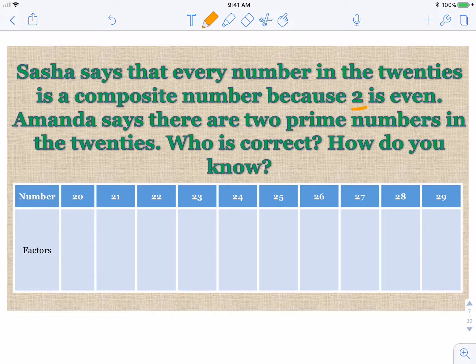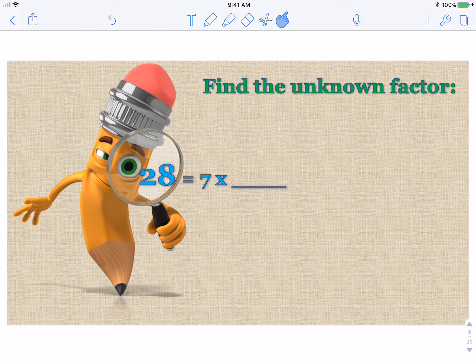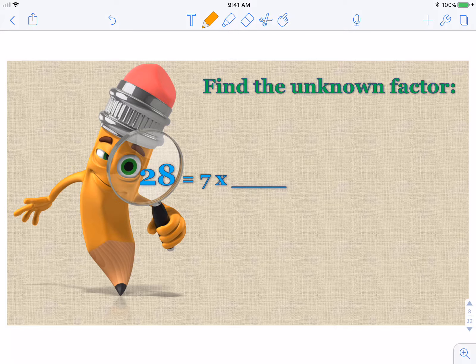Sasha says that every number in the twenties is a composite number because two is even. Well, here's something right here. Two is even, but two is a prime number. Amanda says there are two prime numbers in the twenties. Who is correct? And how do you know? So I've made the chart down below for you to look at the factors of each number. The question is, what you're trying to figure out is that Sasha says every number is composite. Amanda says that there are two prime numbers. So go ahead and pause, list all the factors for these numbers and see if you end up with two prime numbers or all composite numbers.